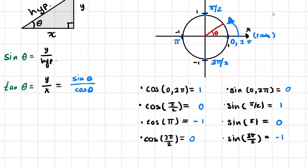Those are the unit circle identities — these are going to be really useful when we start dealing with later chapters. It's good to remember that cosine of zero and two pi is one; cosine of odd multiples of pi like one, three, five is negative one, so it alternates. For sine, any full whole pi — positive or negative — sine is always zero.